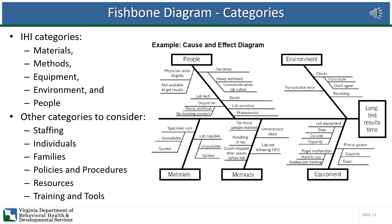The benefit of this process is that it ensures you identify possible causes within each category, and it has visual appeal in that it looks like a fishbone. A potential challenge is that it may become overwhelming if you have many causes and those causes have many sub-causes — it can get quite detailed with bones upon bones. The Institute for Healthcare Improvement in their quality improvement toolkit suggests using the categories of materials, methods, equipment, environment, and people. Other categories you can consider include staffing, individuals, families, policies and procedures, resources, training, and tools. These are the categories you put at the end of the bones and then get your team to brainstorm within those categories.